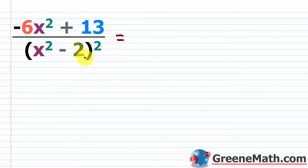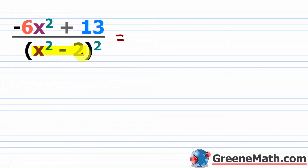That would be your next step if it's not factored. So all we need to do now is check to make sure that x squared minus two is irreducible, or what we call a prime polynomial. It can't be factored using rational numbers, and it can't. So we have this x squared minus two.